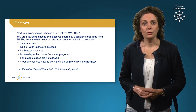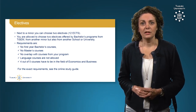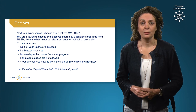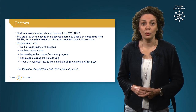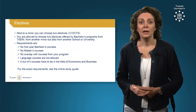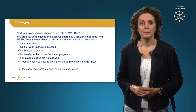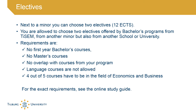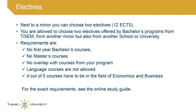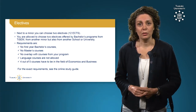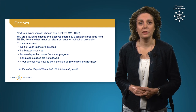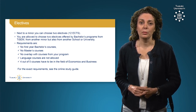Besides the minor, you also choose two electives. These electives can be courses from TISEM, but it is also possible to choose courses from another school or from another university, as long as they meet the requirements. It is not allowed to choose first-year bachelor courses or master courses. The courses should also not overlap with courses from your program. Language courses are not allowed, and four out of five courses have to be in the field of economics and business, which means that one course can be from another field.